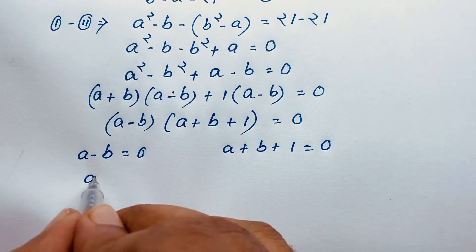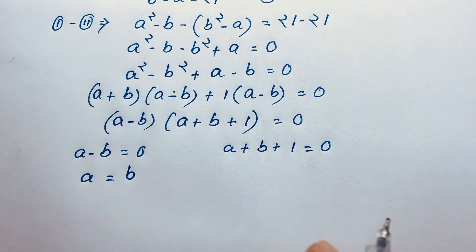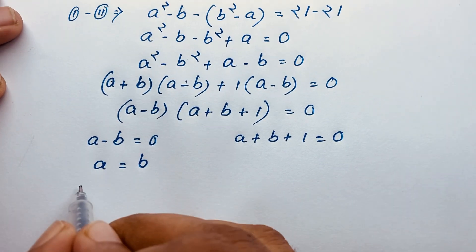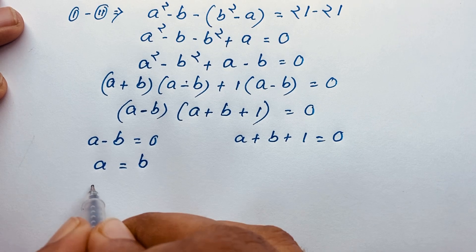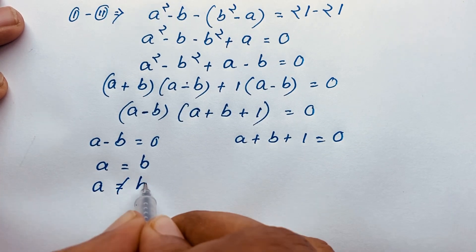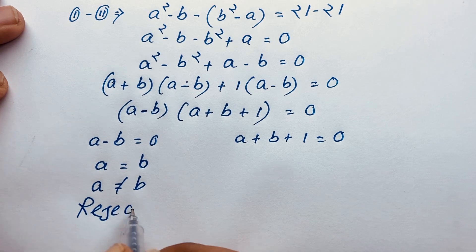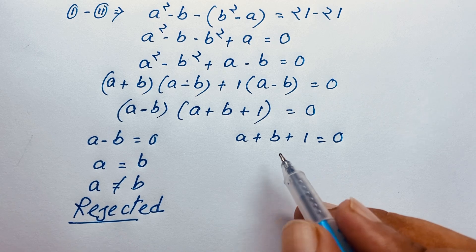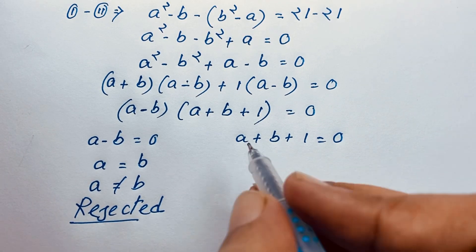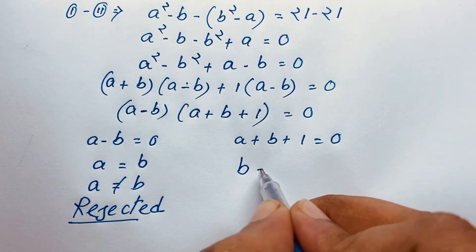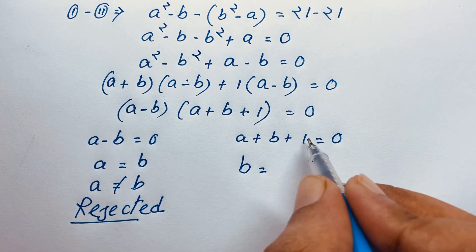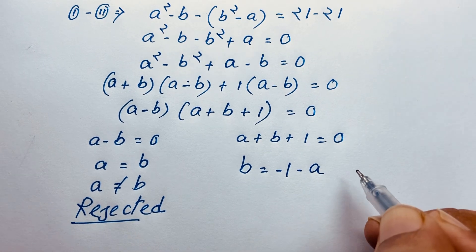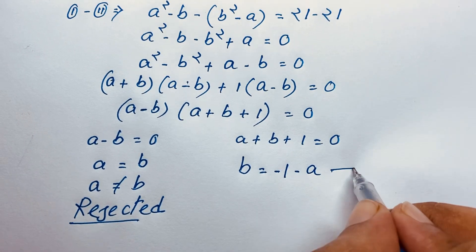From the first case, a equals b. But recall that a is not equal to b, so this case is rejected. We follow the second case: a plus b plus 1 equals 0, so b equals negative 1 minus a. We have found our third equation.